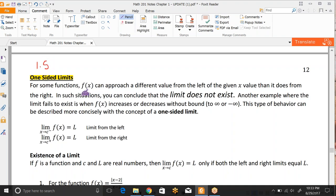For some functions, f can approach a different value from the left of the given x value than it does from the right. In such a situation, you can conclude that the limit does not exist. Another example where the limit fails to exist is when f(x) either gets extremely large without bound or extremely small without bound. That means your numbers are just getting larger and larger or smaller and smaller, more negative. That means you're moving towards positive infinity or negative infinity.